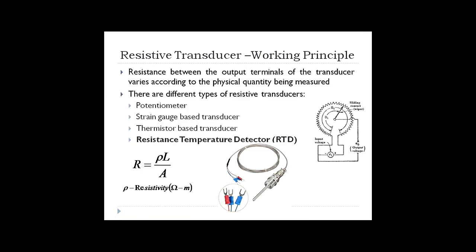Different types of resistive transducers include: a potentiometer, which provides electrical output based on resistance variation; a strain gauge-based transducer; a thermistor-based transducer — thermistor stands for thermal resistor, used to measure temperature with resistance as output; and a Resistance Temperature Detector (RTD), which is also a resistive transducer.